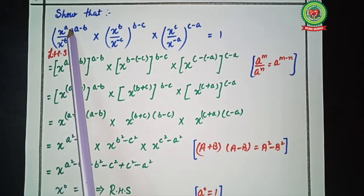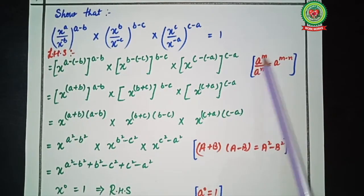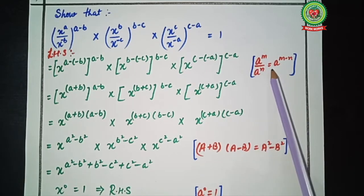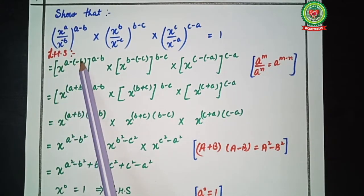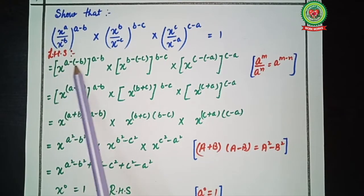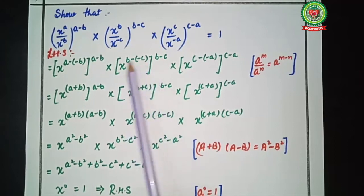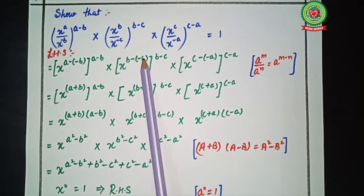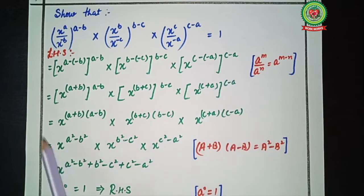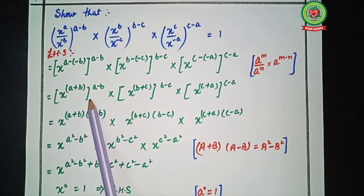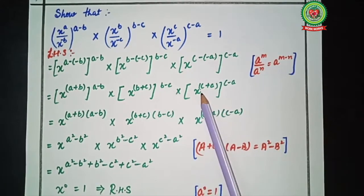We take the left-hand side. Since x raised to power a divided by x raised to power minus b has the same base and is being divided, we apply: a raised to power m divided by a raised to power n equals a raised to power m minus n. So we write x raised to power a minus bracket minus b, raised to a minus b. Similarly, x raised to power b minus bracket minus c, bracket b minus c, multiplied by x raised to power c minus bracket minus a, bracket c minus a. After solving the double negatives, we get x raised to power a plus b, bracket a minus b, multiplied by x raised to power b plus c, bracket b minus c, multiplied by x raised to power c plus a, bracket c minus a.